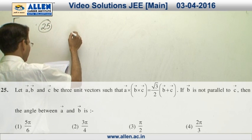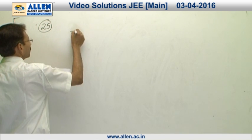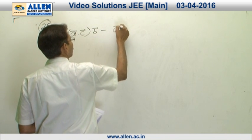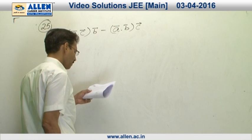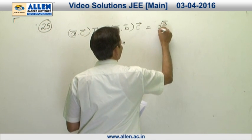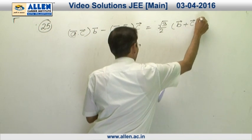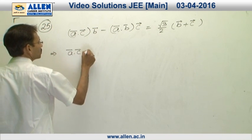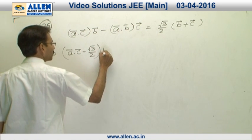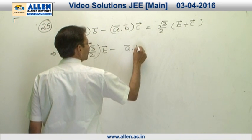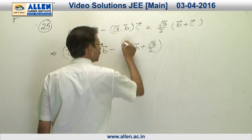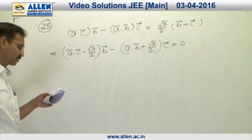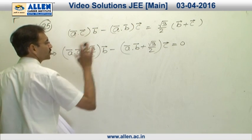In question 25, let us write the vector triple product: (a·c)·b vector minus (a·b)·c vector equals (√3/2)·b vector plus c vector. Bringing those terms to the left-hand side, this becomes (a·c − √3/2)·b vector minus (a·b + √3/2)·c vector equals zero. Since vector b and vector c are non-parallel, they are linearly independent, so both expressions must be zero.